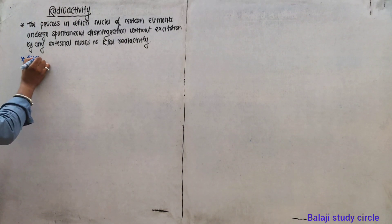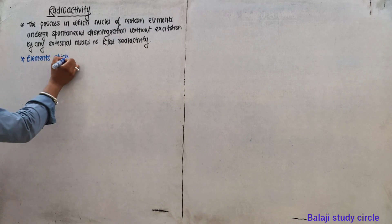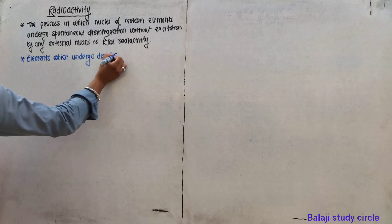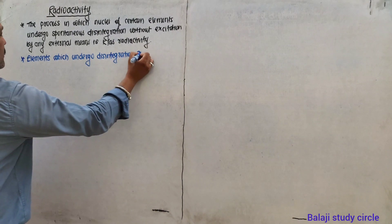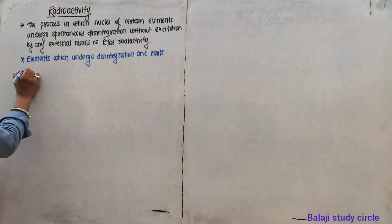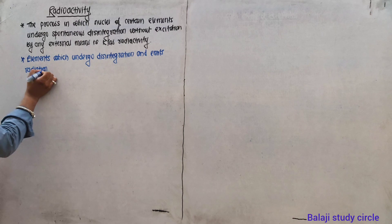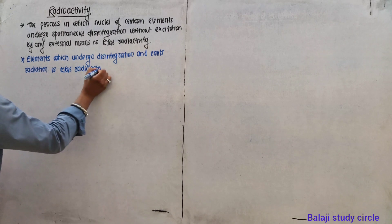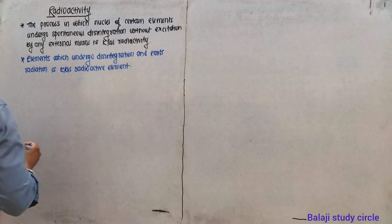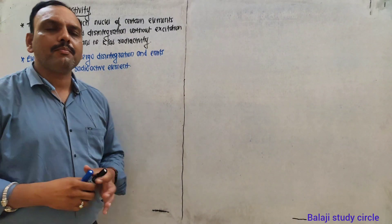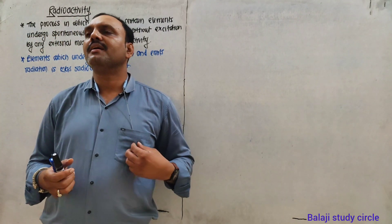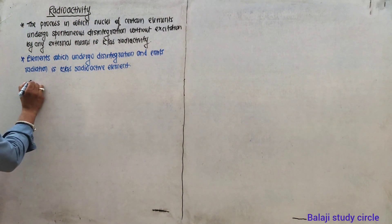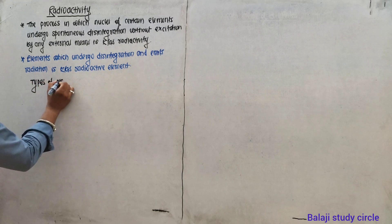Elements which undergo disintegration and emit radiation are known as radioactive elements. The term 'radioactivity' was suggested by Madam Curie and her husband Pierre Curie. Now let's discuss types of radioactivity.